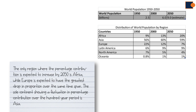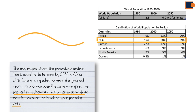You can also include surprising information, like in the example: the sole continent showing a fluctuation in percentage contribution over the 100-year period is Asia.